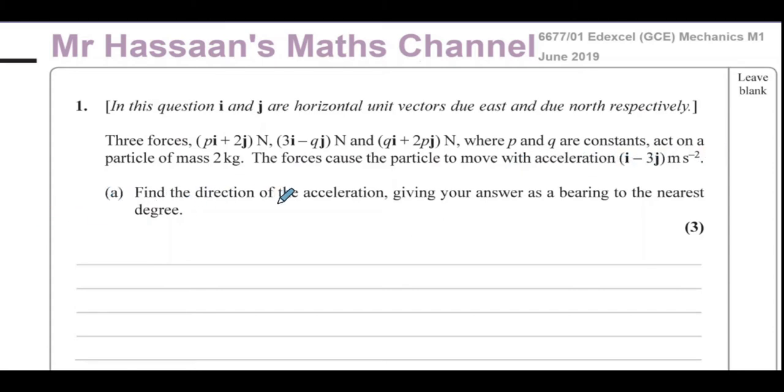First of all, we've got to find the direction of the acceleration, giving your answer as a bearing to the nearest degree. So we know the acceleration is given by the vector (1, -3). We've got to describe this direction of acceleration as a bearing.